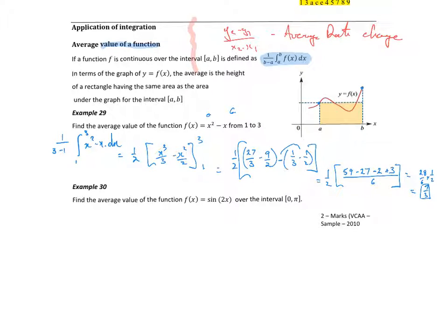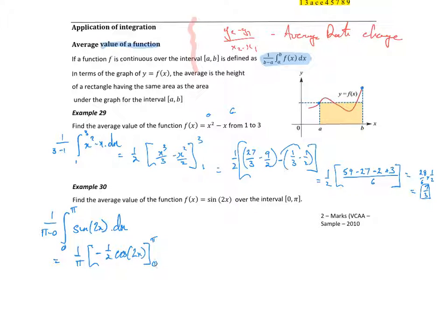Let's go to the second one. The interval between 0 and π. So it's 1 over b minus a, integral between 0 and π of sin(2x) dx, which is 1 over π times the antiderivative. The antiderivative of sine is negative, so we get negative 1 over 2 times cos(2x), evaluated between π and 0. So that gives us negative 1 over 2π times cos(2π) minus cos(0).